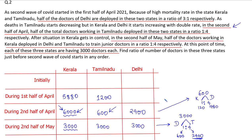And 480 doctors are added to Delhi. After adding those 480 doctors, the number of doctors in Delhi becomes 2400. So during the first half of April, the number of doctors in Delhi was 2400 minus 480, which equals 1920.